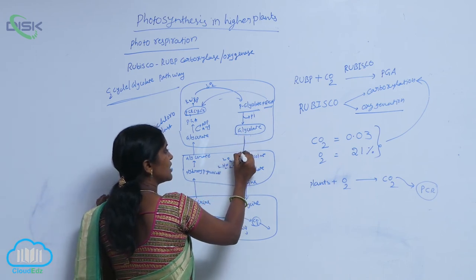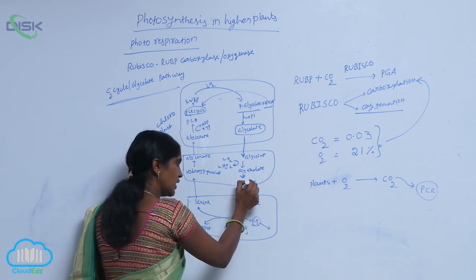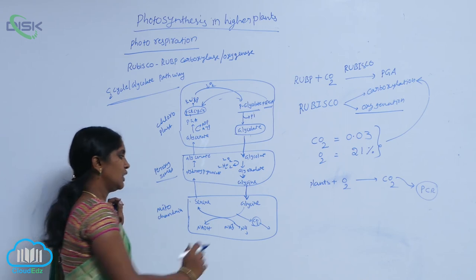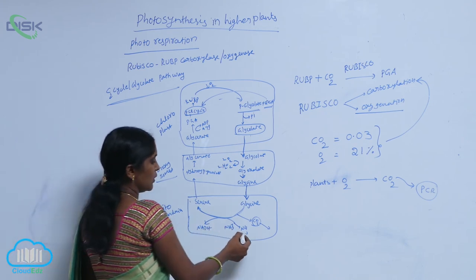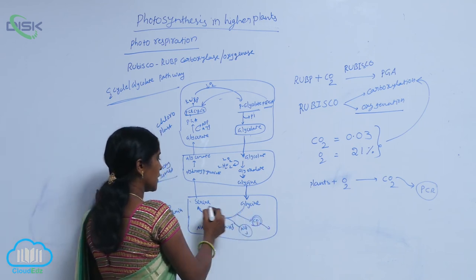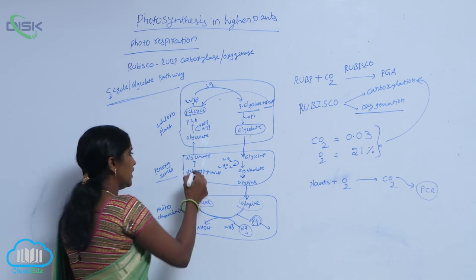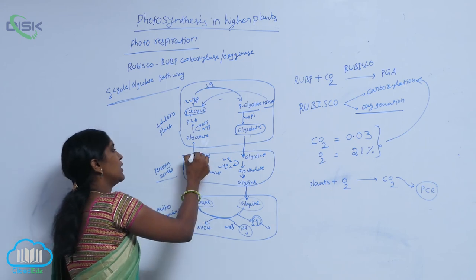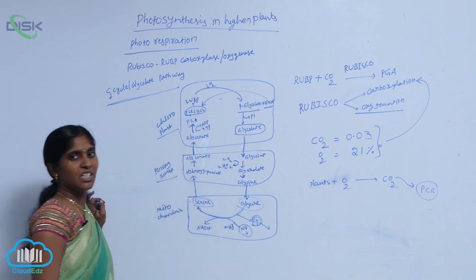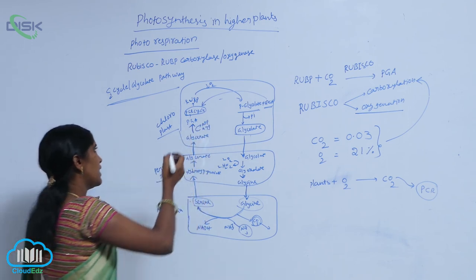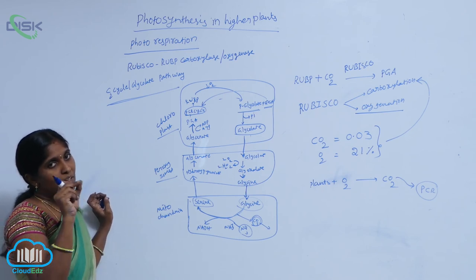The formed glycolate is translocated into peroxisomes, where it turns into glycine. The formed glycine then enters the mitochondria, where the major reactions — decarboxylation and deamination — are carried out. Decarboxylation and deamination result in the production of serine from glycine. The produced serine re-enters the peroxisome, where it turns into glycerate. The formed glycerate then enters the chloroplast, where it is involved in the production of PGA, phosphoglyceric acid, which is the first intermediate compound for the C3 cycle, and from there the C3 cycle is carried out.